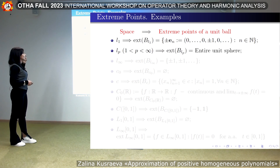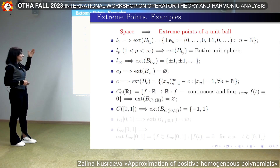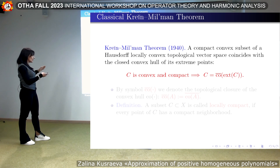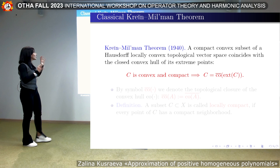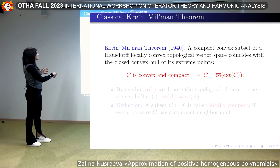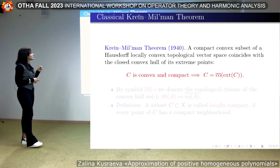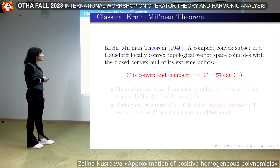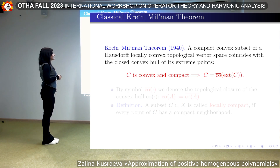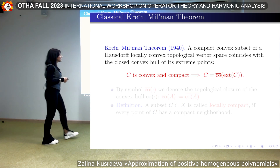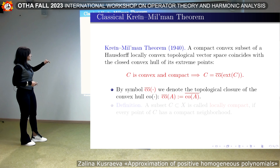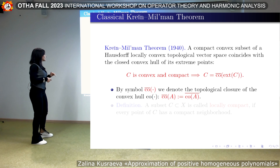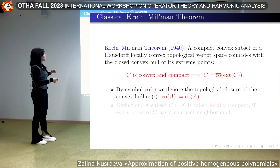The structure of extreme points can also be described for classical Banach spaces. For a general class of convex sets, we have the classical fundamental result obtained in 1940 by Krein and Milman, which says that a compact convex subset of a locally convex topological vector space coincides with the closure of the convex hull of its extreme points.